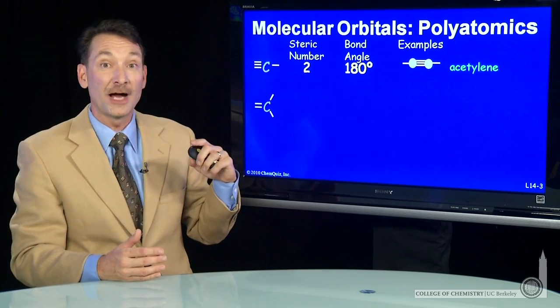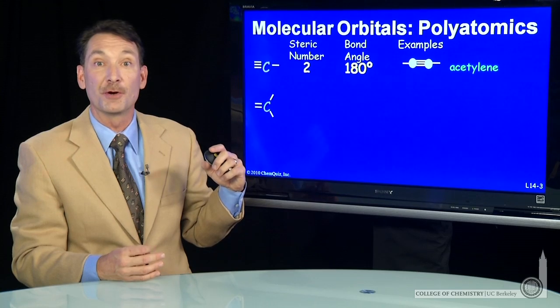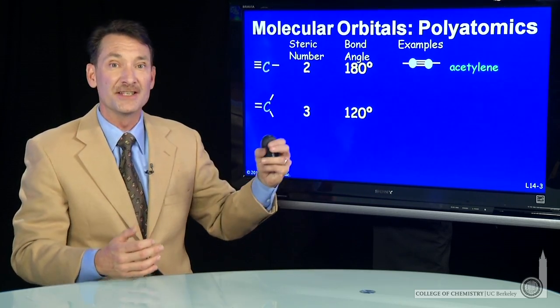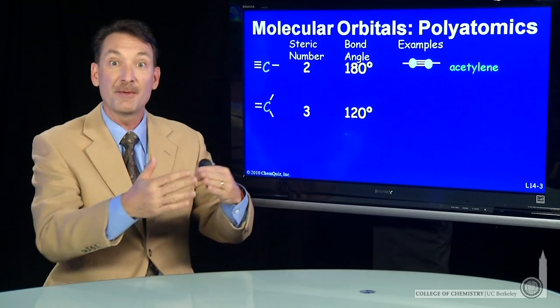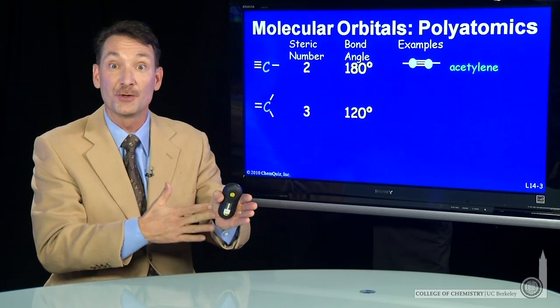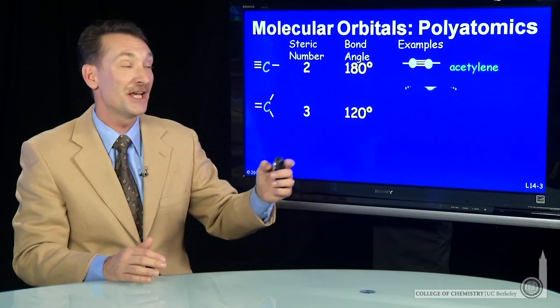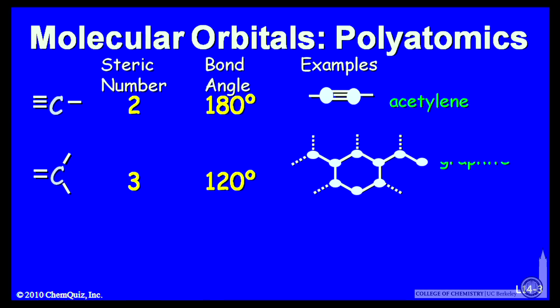And it gets a little more complicated when I go to steric number 3. If I have a bond angle of 120 degrees, there aren't even atomic orbitals that have 120-degree orientation to each other. So what atomic orbital can make that accommodation to form something like graphite, for instance, where all the bond angles are 120 degrees?